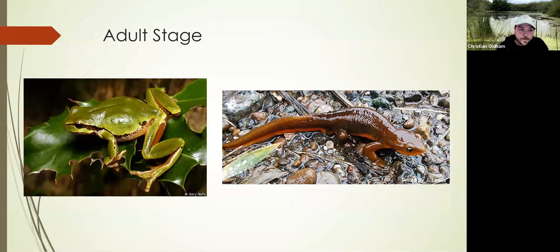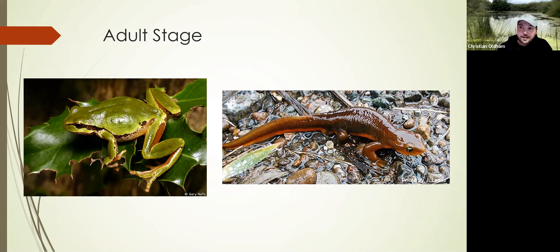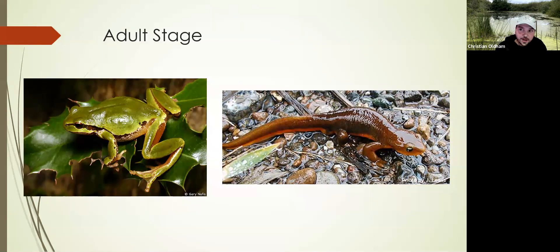Also, if predators get into the pond and start consuming tadpoles or larvae, they actually release chemical cues to each other that tells the whole population, 'Something's in here, something's eating us, we've got to get out of here.' Which is just very interesting. So they end up metamorphosing at an earlier time at a smaller size than they would prefer to, in order to get out of the pond, get into the terrestrial environment, and get away from whatever danger they're currently in.